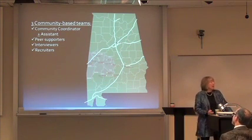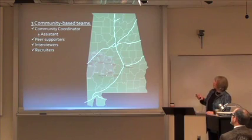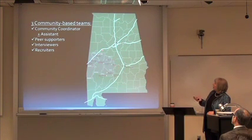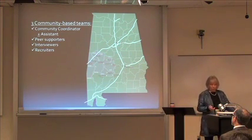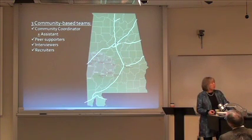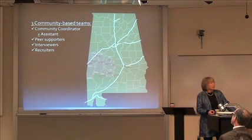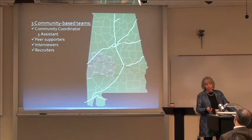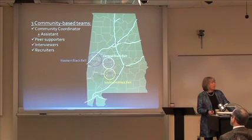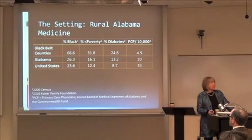Here is part of the reality. Birmingham is right here in the middle, and this is I-20. Here is the eight-county area where we work. This is approximately one-and-a-half hours to get into, and approximately two-and-a-half hours one way to try to get further in. This is not possible without having community members with boots on the ground. Our community-based teams consist of a community coordinator, sometimes with an assistant, the peer supporters, interviewers, and recruiters — all of which are community members. We had a Western Black Belt team, a Central Black Belt team, and a Southern Black Belt team.